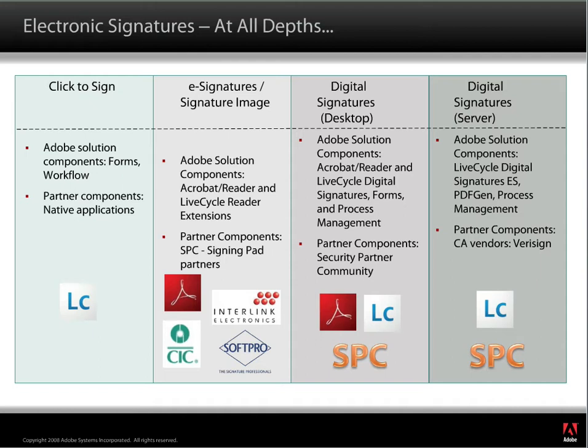Within the Adobe product spectrum, we support four different kinds of electronic signatures. We support click-through signatures — typically you'd see these in a web browser type of format, where you'd browse to a document or form and click an approve or deny button on the form itself. These can be more complex or simple depending on the type of application, and we support those within our LiveCycle platform.